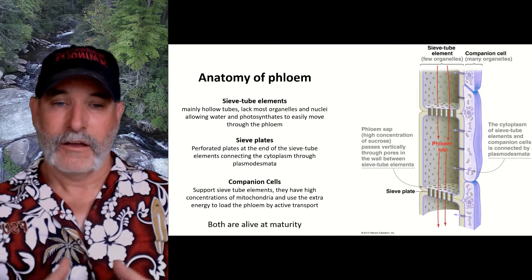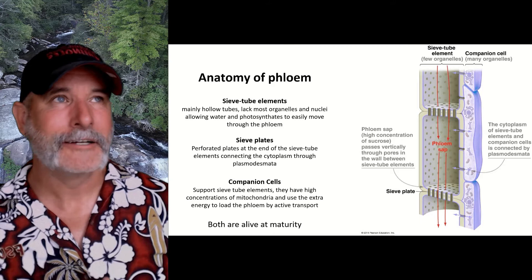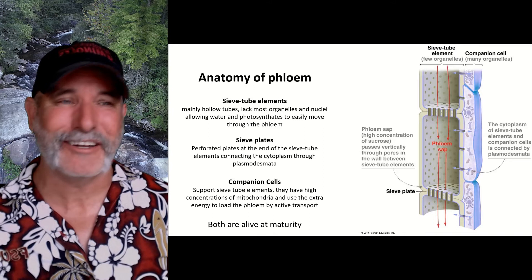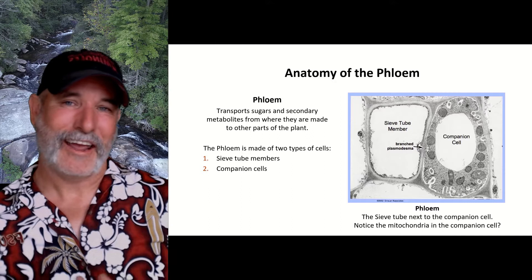We also have a companion cell. Companion cells are really metabolically active and they're loaded with mitochondria — a plant cell loaded with mitochondria. They're doing active transport. The phloem is made up of the sieve tube member and the companion cell. They're alive because you have to load the phloem. You're doing active transport, doing work, and you need a live cell to do that.